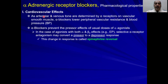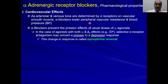Regarding the blood vessels, the normal sympathetic response is to cause vasoconstriction of arterioles and venules. So the opposite will be vasodilation, which will lower the peripheral vascular resistance and hence the blood pressure.